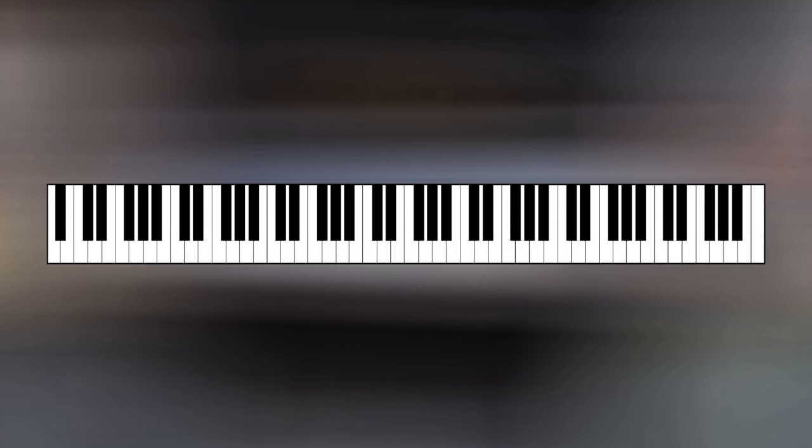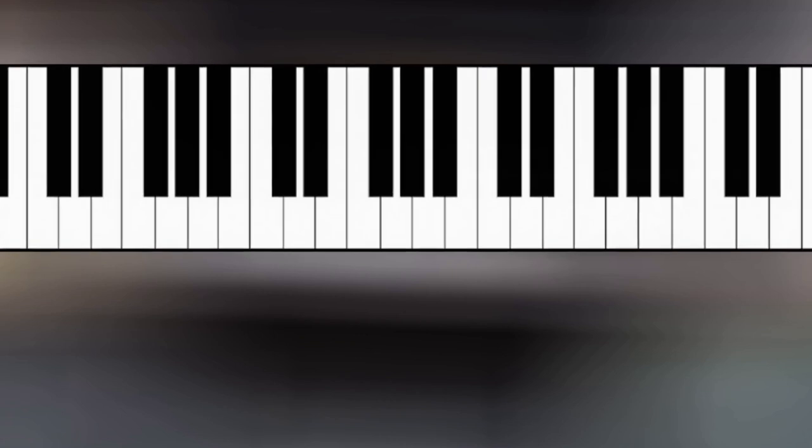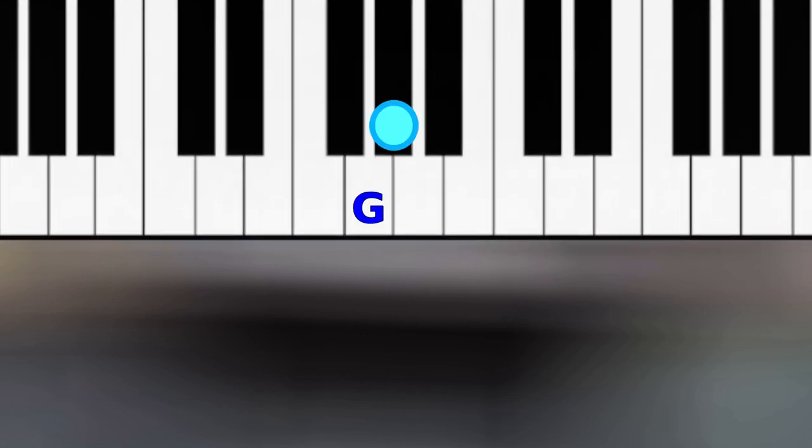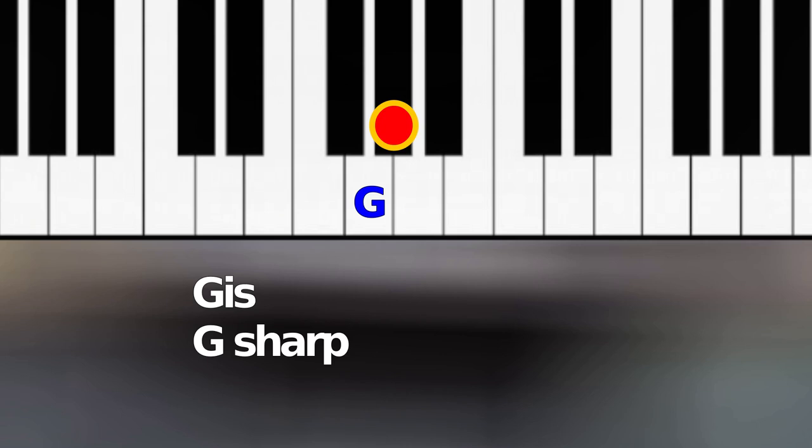Let's take the black key between the G and the A as an example. If the G has to be raised by a semitone, meaning that this black key is played instead of the white G, then the black key is called GISS in German and G SHARP in English.